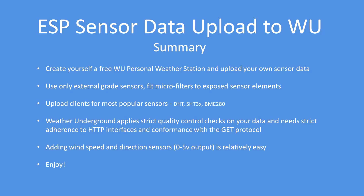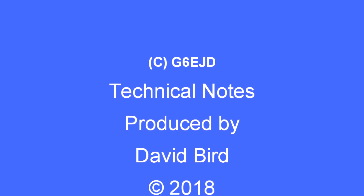Adding wind speed and direction sensors is relatively easy. Both sensors I found on AliExpress - links in the description - give 0 to 5 volt output and can be read with an analog read statement then scaled accordingly. I've given scaling examples in the slides. Overall, this gives you the ability to create your own personal weather station feeding the worldwide web of weather stations - many millions that seem to exist around the world. Hope you find the code and examples useful, and I hope you found this technical note interesting.